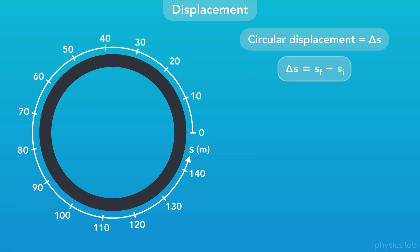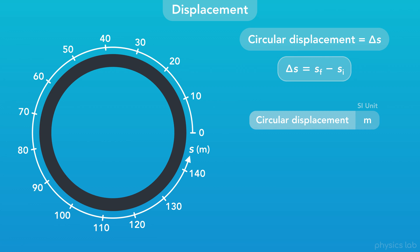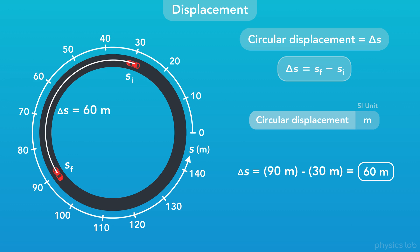What about displacement? Just like with linear motion, the displacement of an object in circular motion is the change in position, delta s, which is equal to the final position minus the initial position. The SI unit for displacement is also meters. As an example, if this car started at an initial position of 30 meters and moved to a final position of 90 meters, then the car's displacement would be 90 minus 30, or 60 meters. This displacement is not a straight line — it's the arc length along the circular path, which is why we sometimes also refer to delta s as arc length.